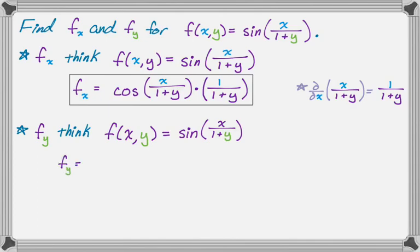So ∂f/∂y, it's the derivative of sine of something, is cosine of that thing. And then times, we need the derivative of that thing. So we're going to find the derivative of x/(1+y). But y is the only variable. So in calc one, if I were finding this derivative, I would have rewritten it as x times the quantity (1+y) to the negative first. And now I would just do a power rule chain rule thing.